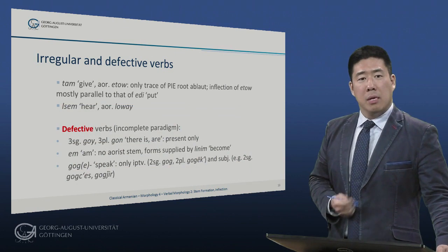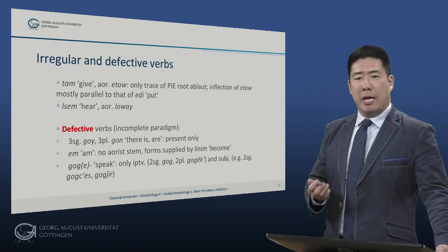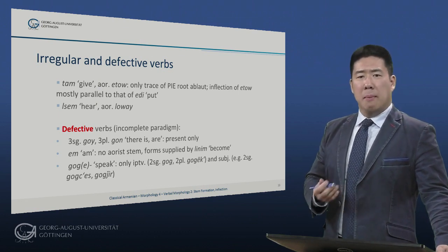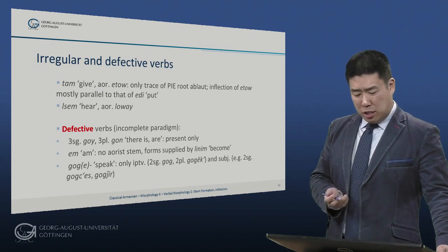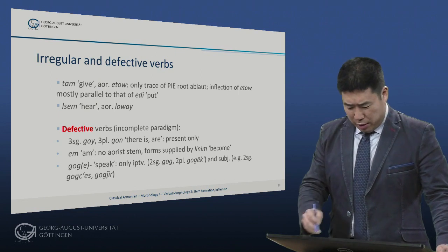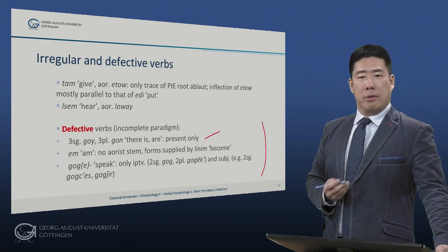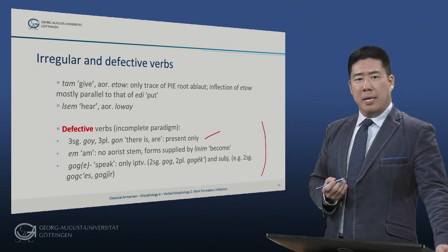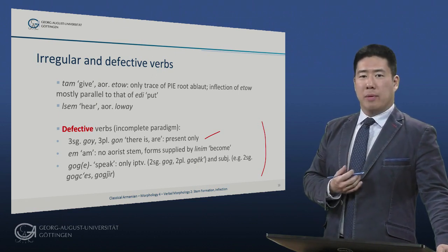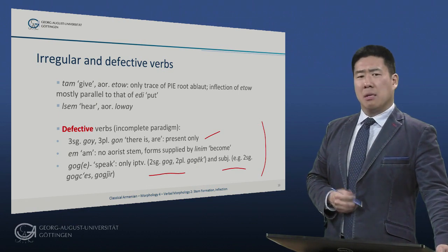There are more irregular and defective verbs. 'Tam' (give), aorist 'etu' — this is perhaps the only clear trace of Proto-Indo-European root ablaut vowel alternations, not the kind that developed in non-final syllables in classical Armenian, but old inherited verbal alternations. The inflection of 'etu' is mostly parallel to that of 'edi' (put). 'Lesem', aorist 'luai'. Finally, there are some defective verbs with incomplete paradigms: 'goi/gon' (there is/there are) is present only. The verb 'em' (I am) has no aorist stem — those forms are instead supplied by 'linim' (become). And the stem 'gog' (speak) occurs only in certain imperative and subjunctive forms and does not build a complete paradigm.